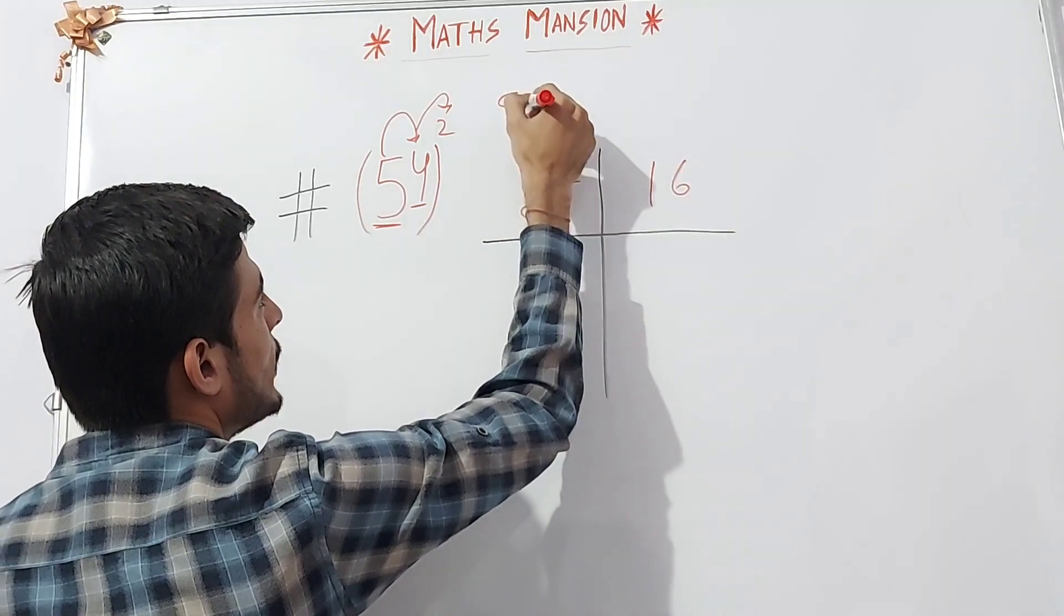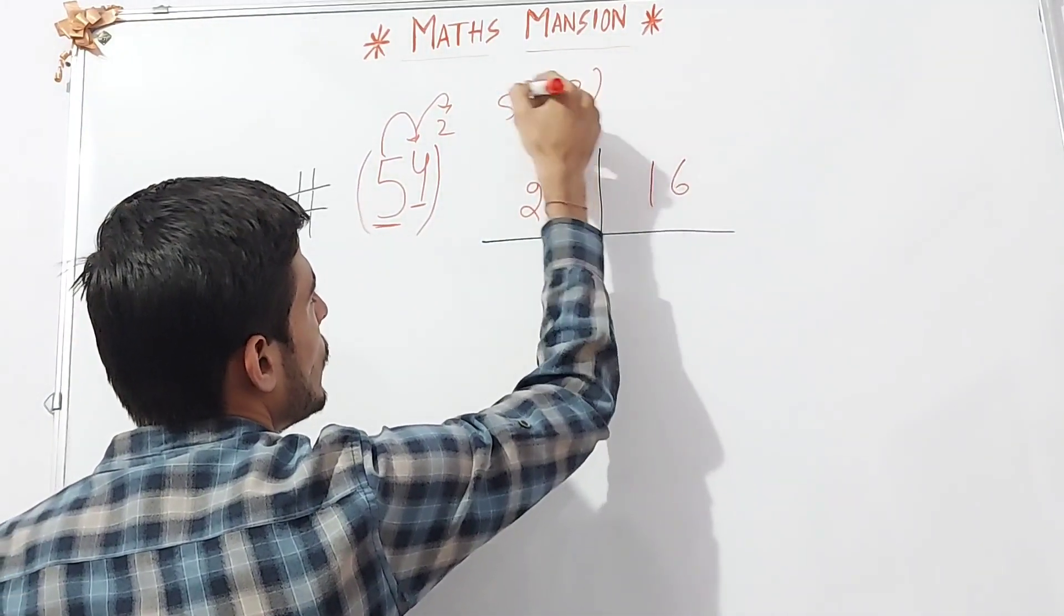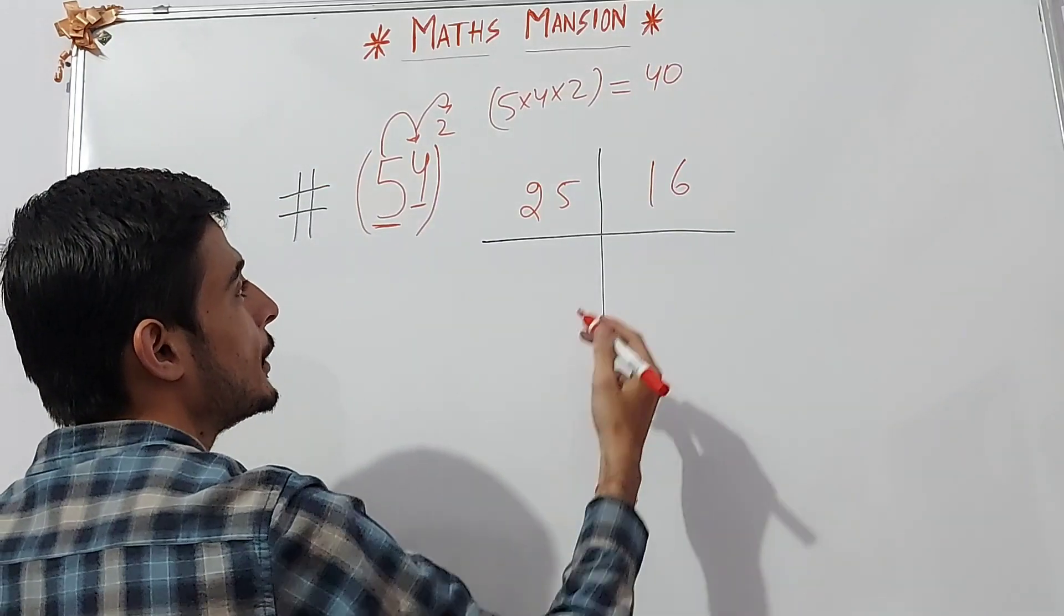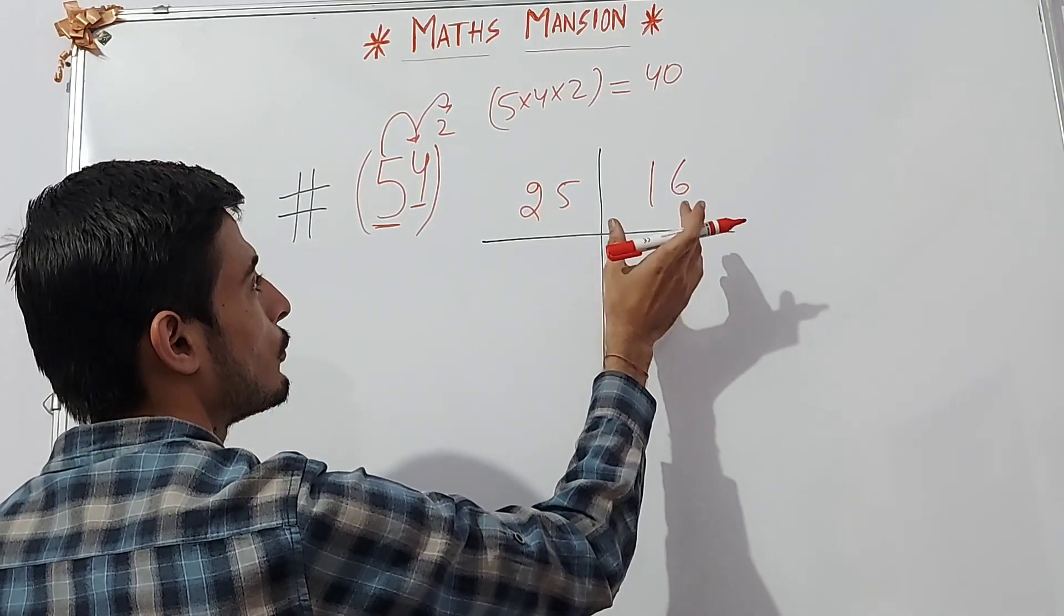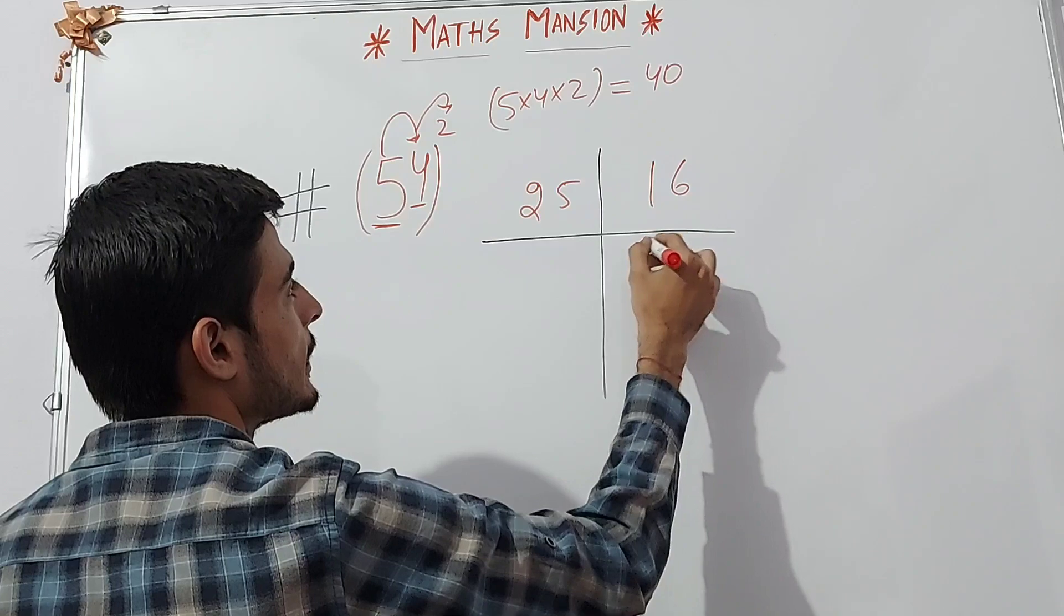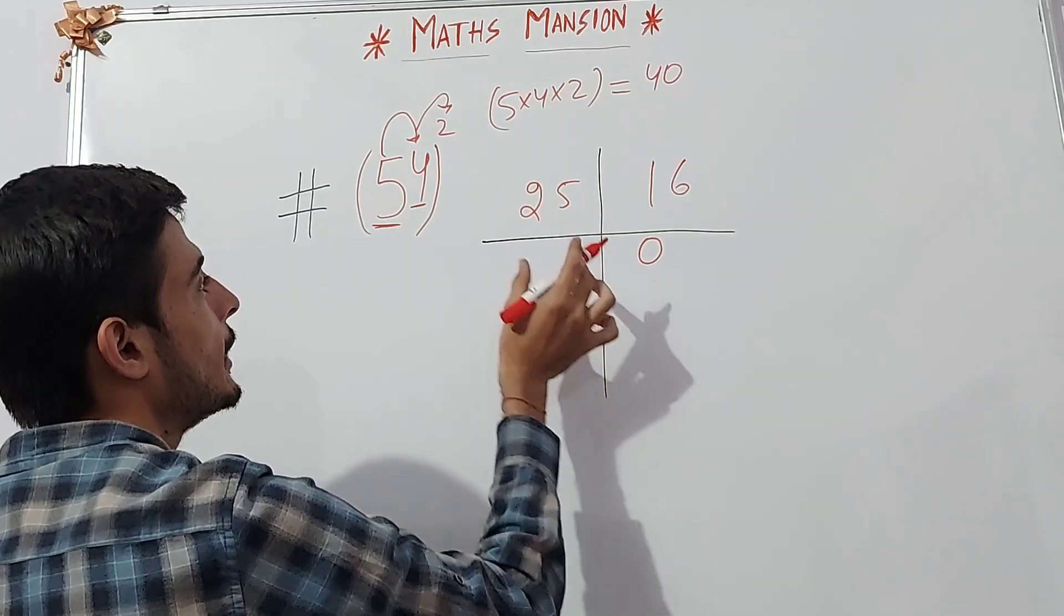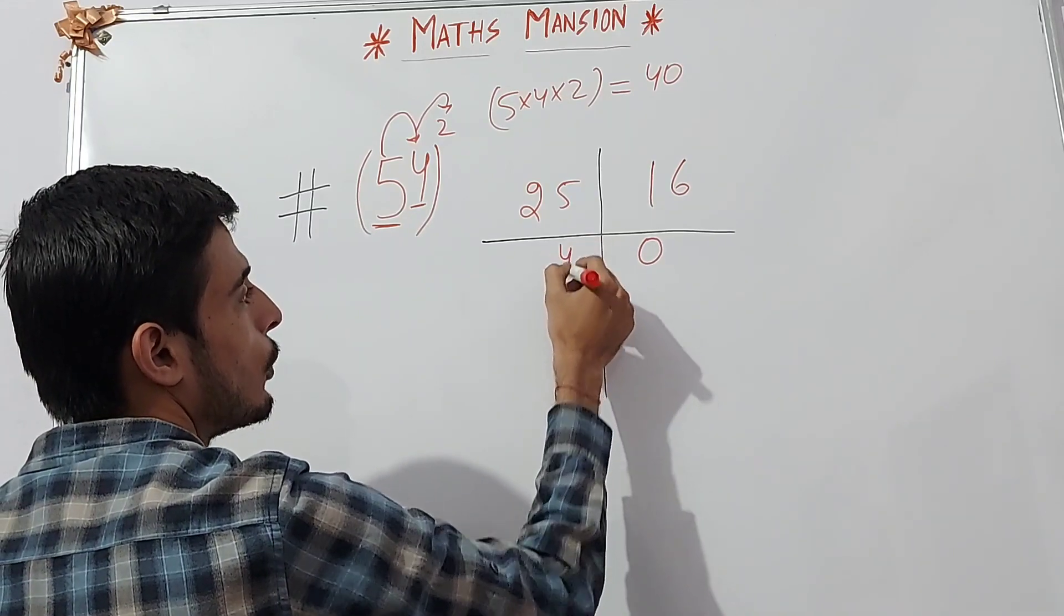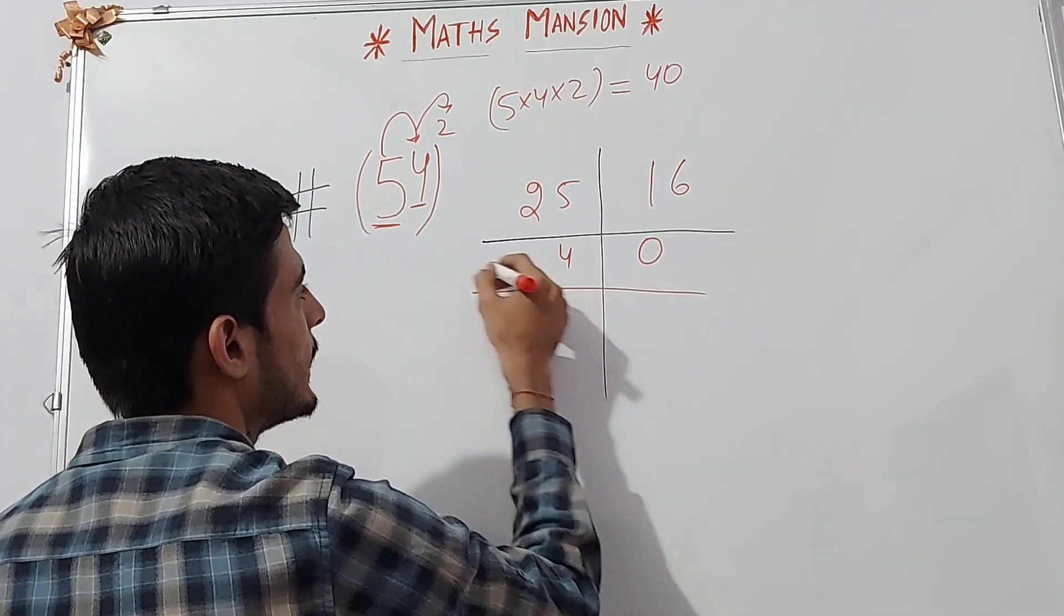So we get 5 into 4 into 2 which equals 40. Now write 0 under the 10th digit of the first column, that is here, and write 4 under the 1st digit of the second column, that is under 5 write 4. Now we have to add these.